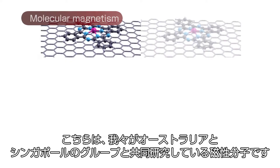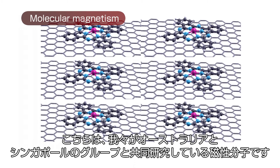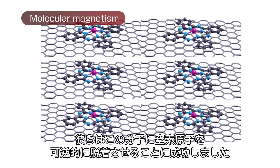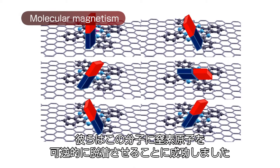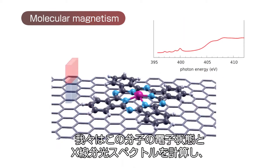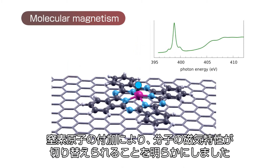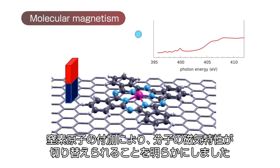Here is such a molecule that we have been studying together with groups in Australia and Singapore. Our colleagues showed that nitrogen can be attached and removed reversibly from the molecule. In Shiba, we have been calculating the electronic state and X-ray spectrum. Thereby we can show that by nitrogen attachment, the magnetism can be turned on or off.